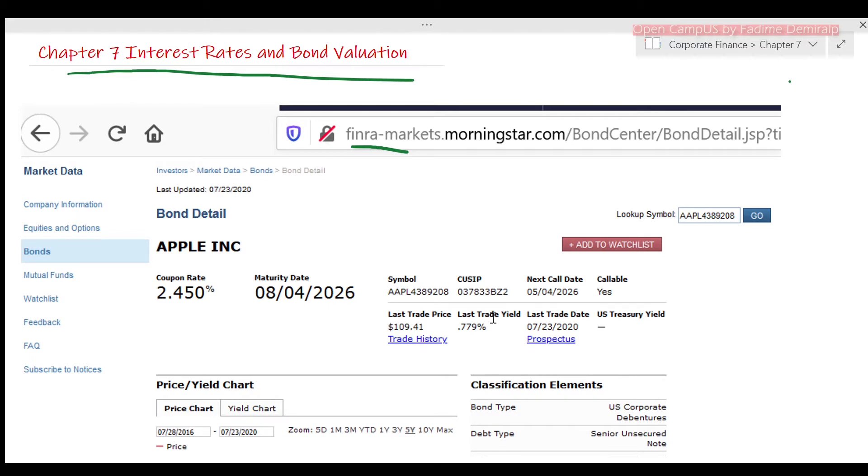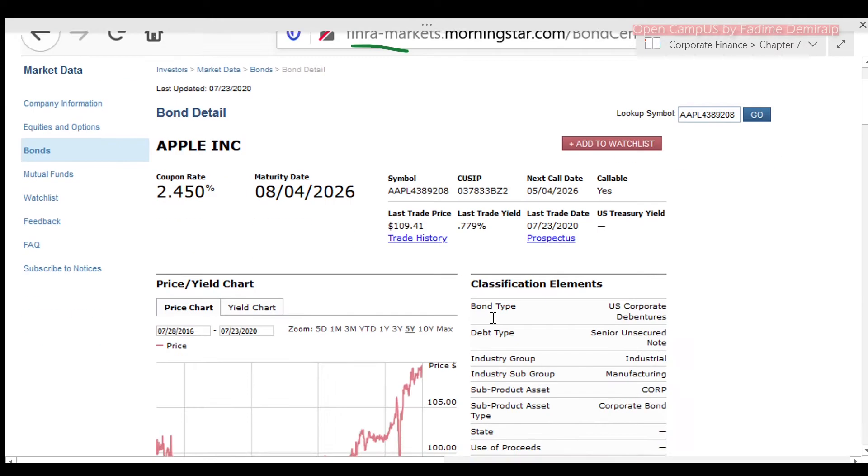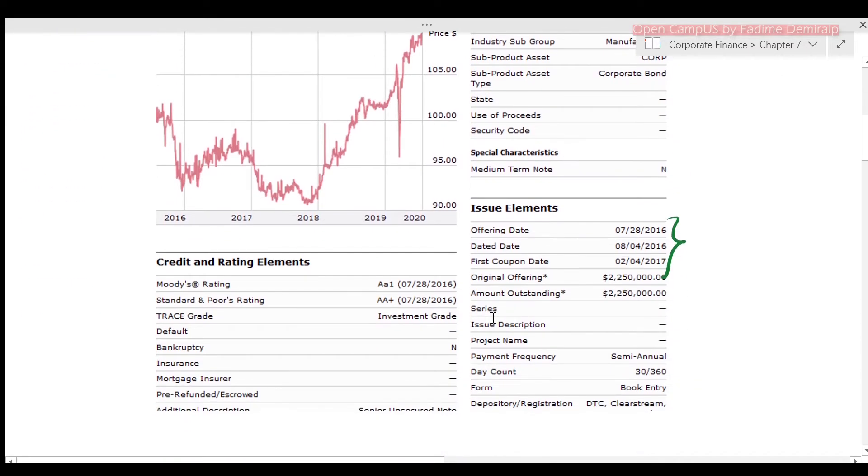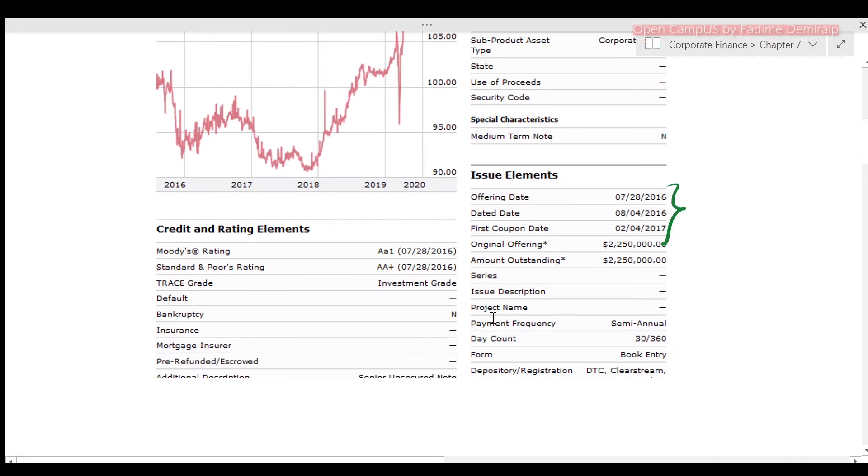Let's see the Standard & Poor's rating for this bond. It's AA+. AA means this debt has a very strong capacity to pay interest and repay principal. And with the plus sign, we understand that it's the strongest AA. This bond is in high-grade bond class. Please visit S&P's webpage to see and understand their rating scales in detail. See the link in description down below. You will also find a link for Moody's rating there.